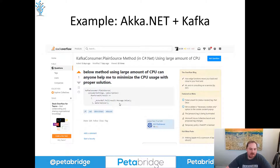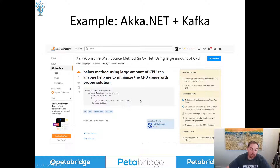I can immediately spot what the problem is here — the actorref.tell method is asynchronous and non-blocking. As a result, we're going to consume events from Kafka as fast as the Kafka client can possibly push them into our stream. That's going to drive up a large amount of CPU utilization inside the system. There's going to be lots of events, all in flight, all getting processed at once. And if there's no backpressure support built into this application, high CPU, high memory utilization, or high I/O is going to be the natural consequence.